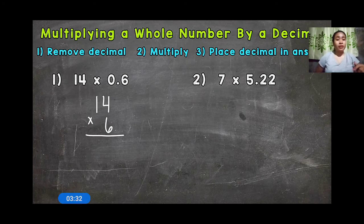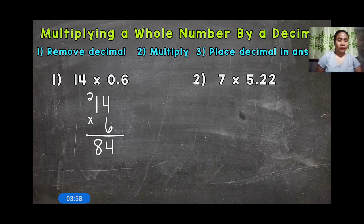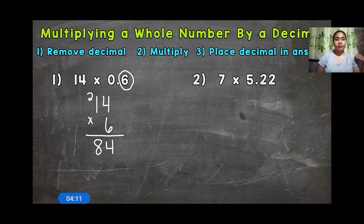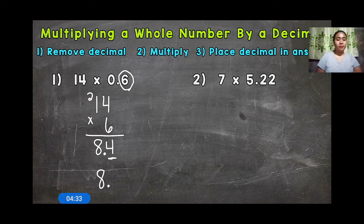Number 2: multiply. And number 3: place the decimal in the answer. We multiply just like any other multiplication problem involving whole numbers. So 6 times 4 is 24, 6 times 1 is 6, plus that 2 is 8, so we get an answer of 84. But we're not quite done yet — step 3, we need to place the decimal in our answer. We look at the original problem and count how many digits are to the right of a decimal. We have 1 — this 6 here. So our answer must have 1 digit behind the decimal, giving us 8 and 4 tenths.